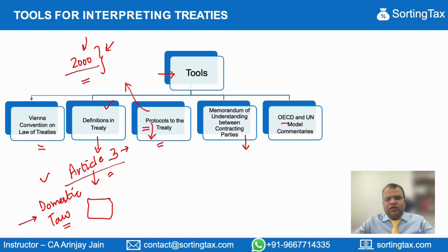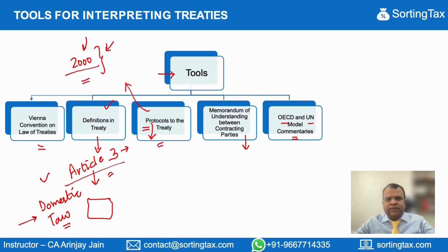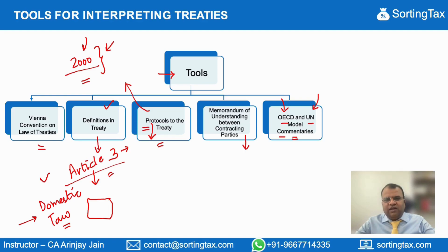The OECD and the UN model commentaries. It is but obvious that because most of the countries use the OECD model tax treaty or the UN model tax treaty as a basis and starting point for entering into tax treaties, a large part of the text of the treaties actually resembles the OECD model tax convention or the UN model tax convention. Therefore, the interpretation or explanation placed by these — the OECD model commentary as well as the UN model commentary — are one of the swiftest, easiest, and most authentic applications as to how treaties should be interpreted.